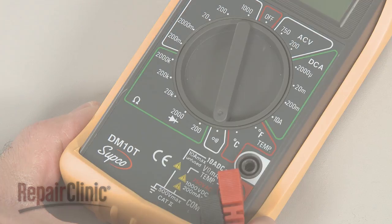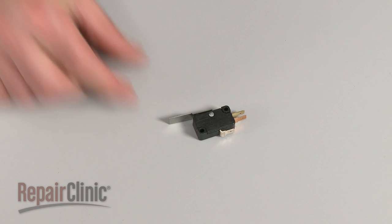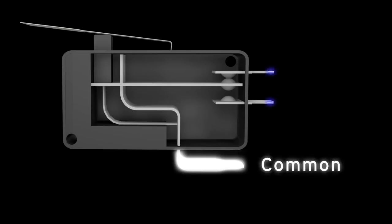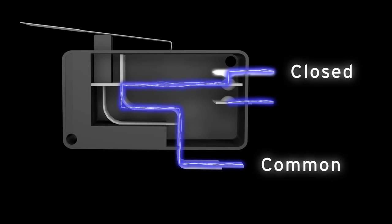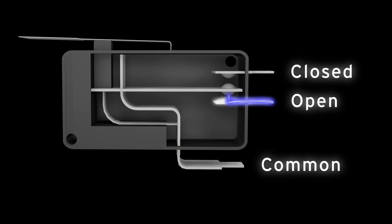Before you begin, make sure the switch you're testing has been removed or isolated from the appliance. Three terminal switches will have a common terminal, a normally closed terminal that provides continuity before the switch is actuated, and a normally open terminal that provides continuity after the switch is actuated.